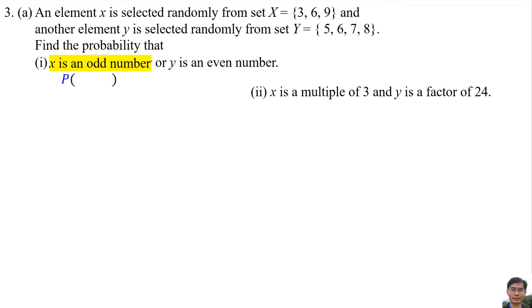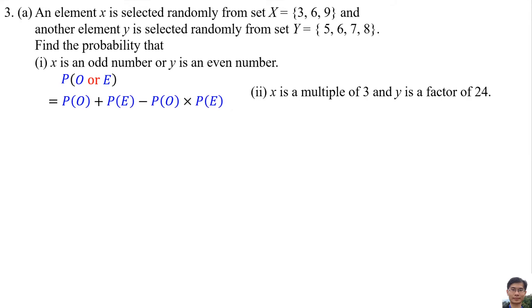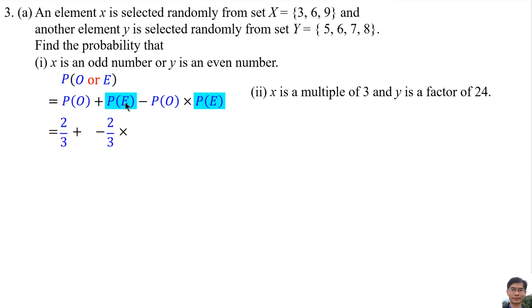Let X be a set where an odd number is O, and Y be a set where an odd number is O. Using the formula: P(O) + P(E) - P(O) × P(E). P(O) is 2 over 3: 2 because there are only two odd numbers, 3 and 9; 3 because there are 3 numbers in set X. The even numbers are 6 and 8, giving 2 over 4 because there are 4 numbers in set Y. Thus, the answer is 5 over 6.